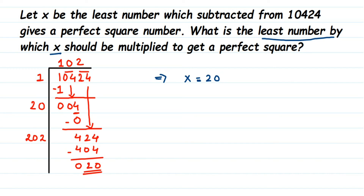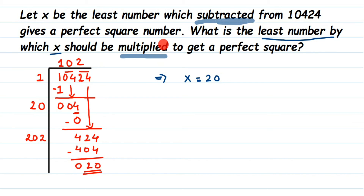For the second part: x = 20, which is not a perfect square. We need to find the least number to multiply with 20 to get a perfect square. Whenever you see 'least number to multiply or divide,' you use prime factorization. So we perform the prime factorization of 20.